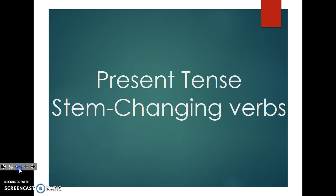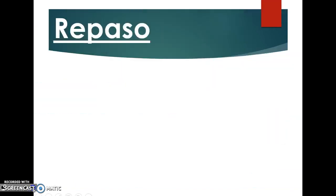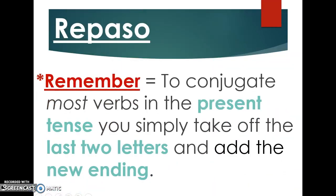So let's get started. Just a quick review of present tense. To conjugate most verbs in the present tense, you simply take off the last two letters and then add the new ending. Remember that the new ending needs to match the same subject pronoun. For example, if you're talking about 'yo,' then you put an 'o' ending in the present tense.